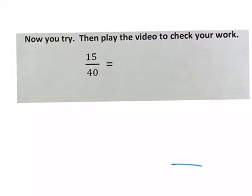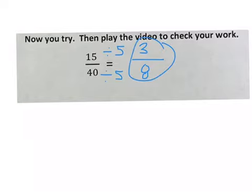So 15 fortieths. 15 ends in a 5 and 40 ends in a 0. So I know that they are both divisible by 5. Whatever you divide the numerator by, you must divide the denominator by. 15 divided by 5 is 3 and 40 divided by 5 is 8. So your answer is 3 eighths. I know it's in simplest form because 3 and 8, their only common factor is 1.